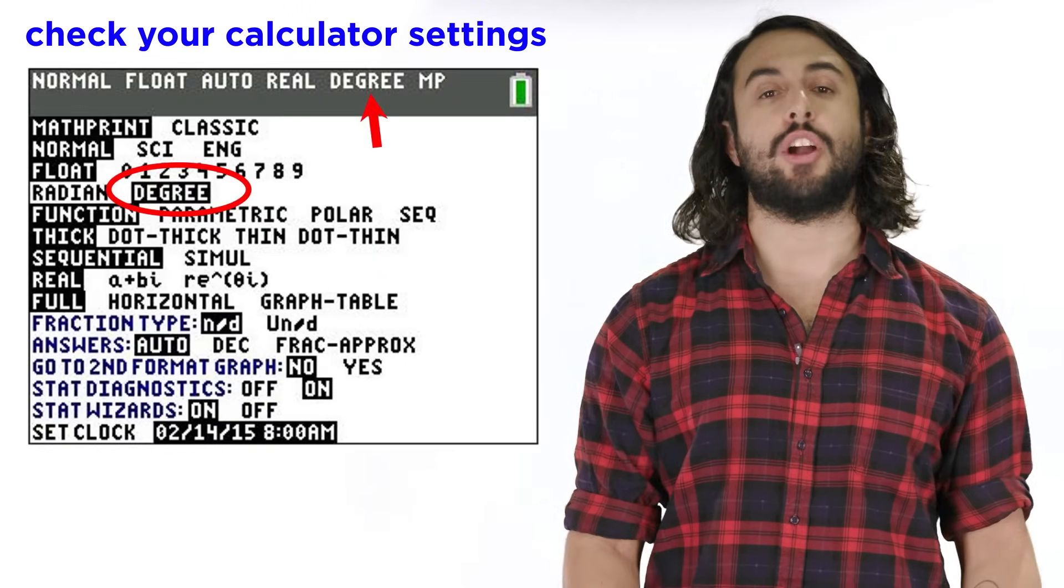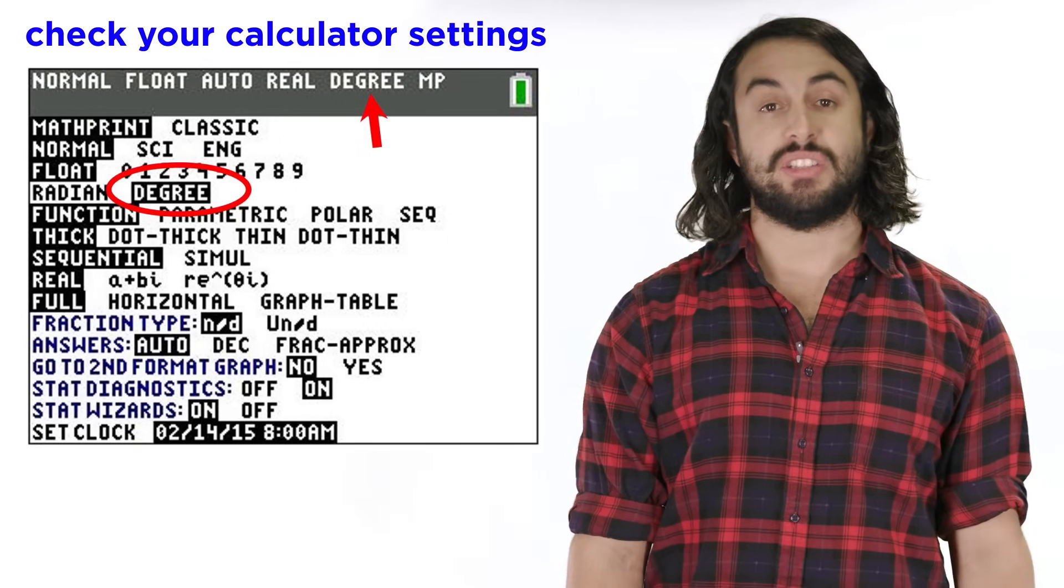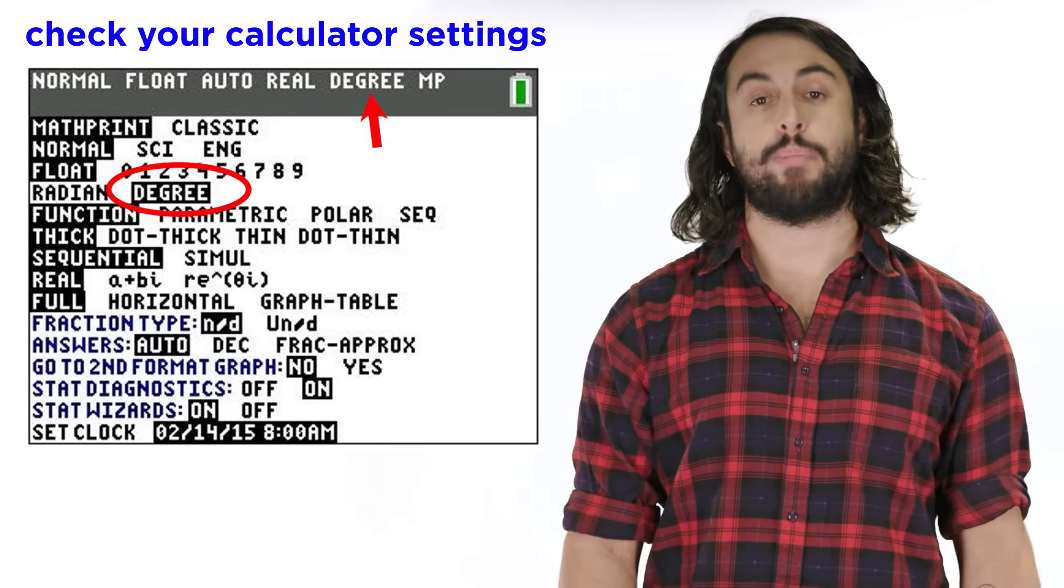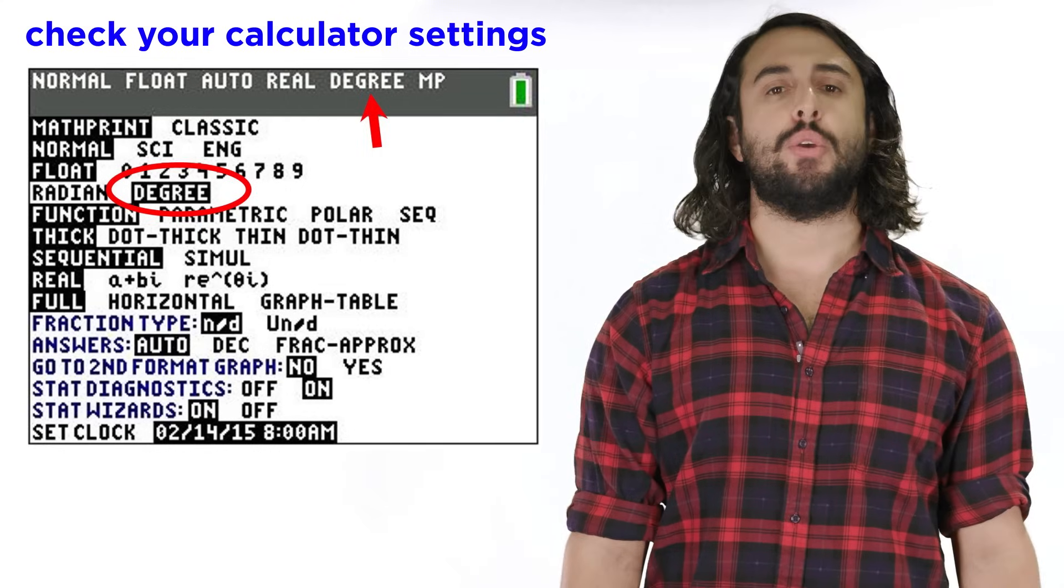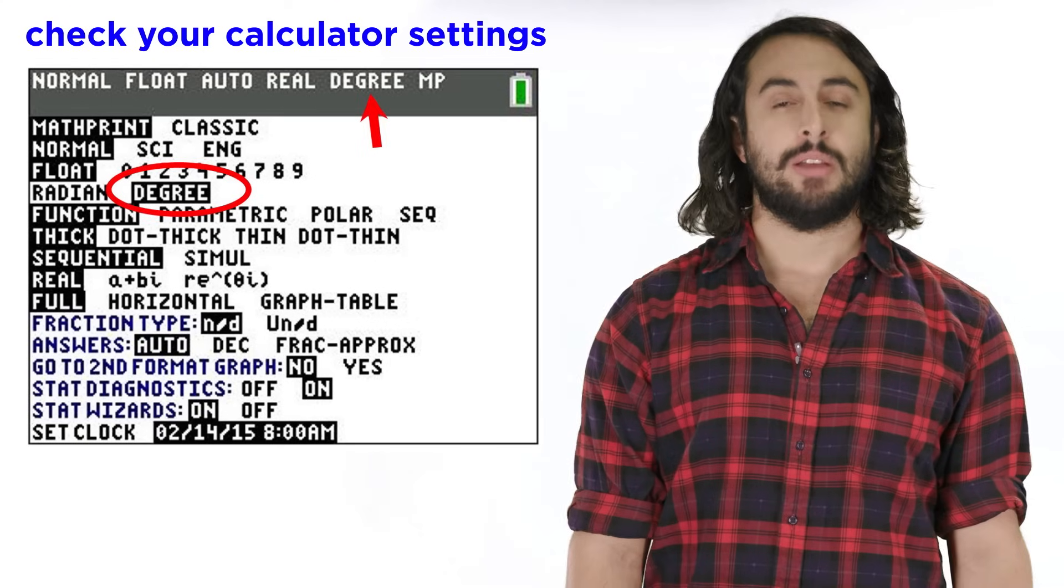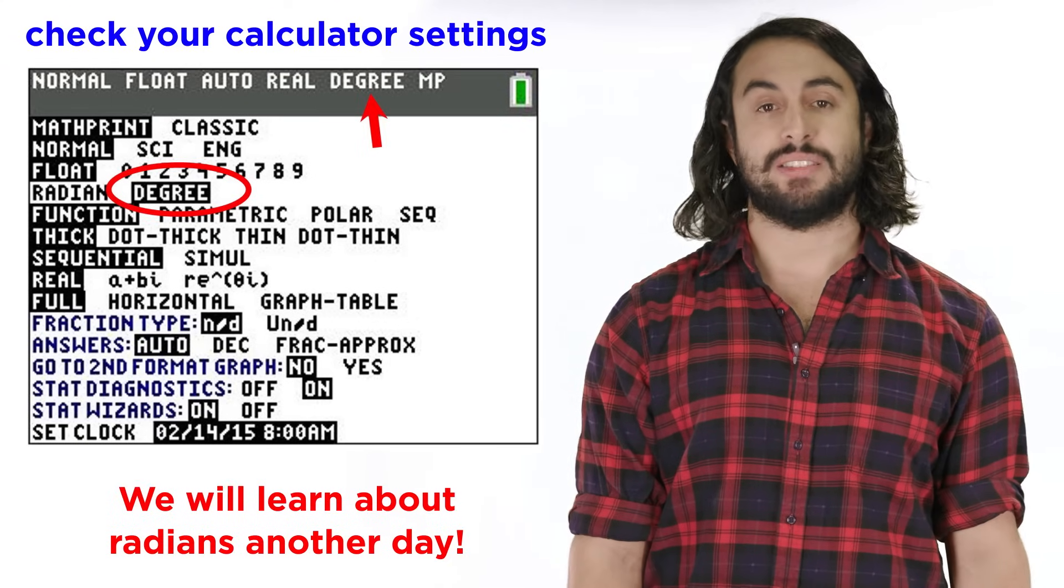Also if you are using a graphing calculator, take a moment to familiarize yourself with the different settings it uses to report angles, which are degrees and radians. If you are more familiar with degrees, make sure that setting is selected, and we will learn about radians another day.